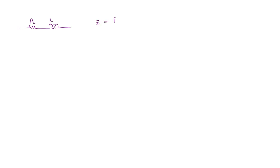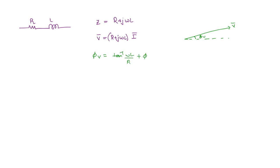Next, for a combination of R and L in series: the impedance is Z = R + jωL, so V̄ = (R + jωL)·Ī. Taking the voltage phasor as reference at angle φ_v, we get φ_v = tan⁻¹(ωL/R) + φ_i. Since tan⁻¹(ωL/R) is a positive quantity, φ_i is always less than φ_v — meaning the current is lagging the voltage phasor.